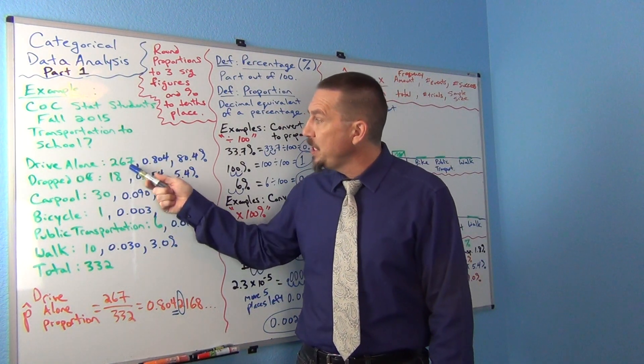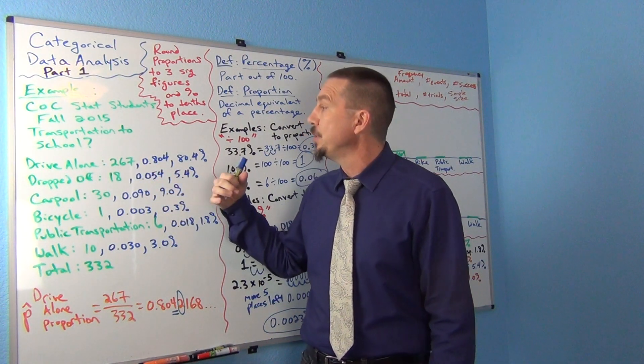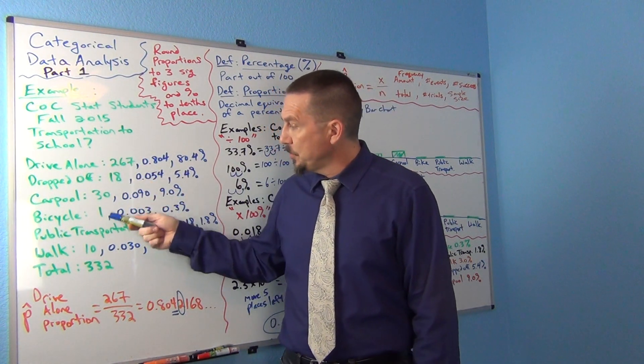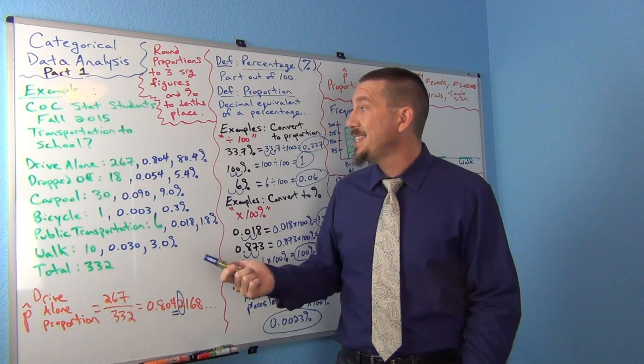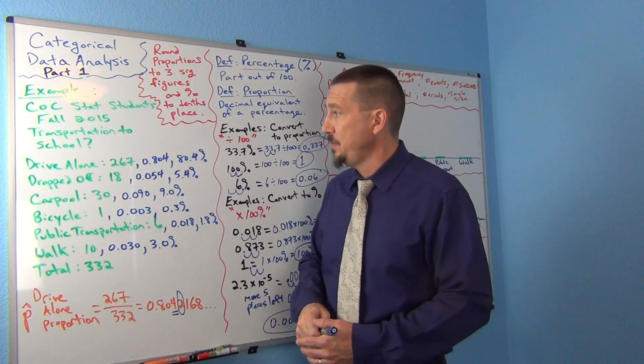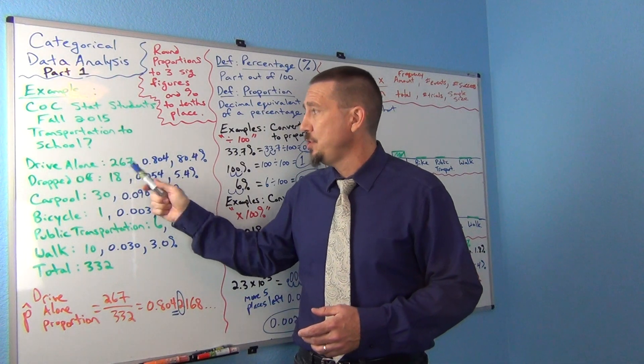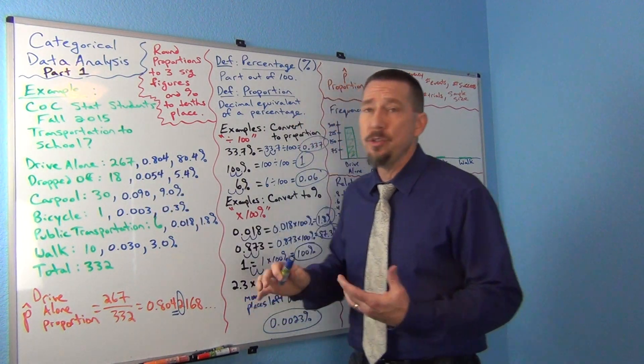So these would be the counts or the amounts or frequency. These numbers here. But what would be the percentages or the proportions for each of these variables? So what proportion of the students drive alone? So for that, I'm going to use a formula.